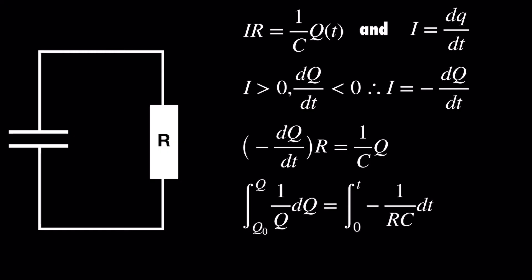The hardest part might be seeing what the bounds are, but since we want to go from some time 0 to some time T, we know that the charge is going from an initial Q0 to Q.